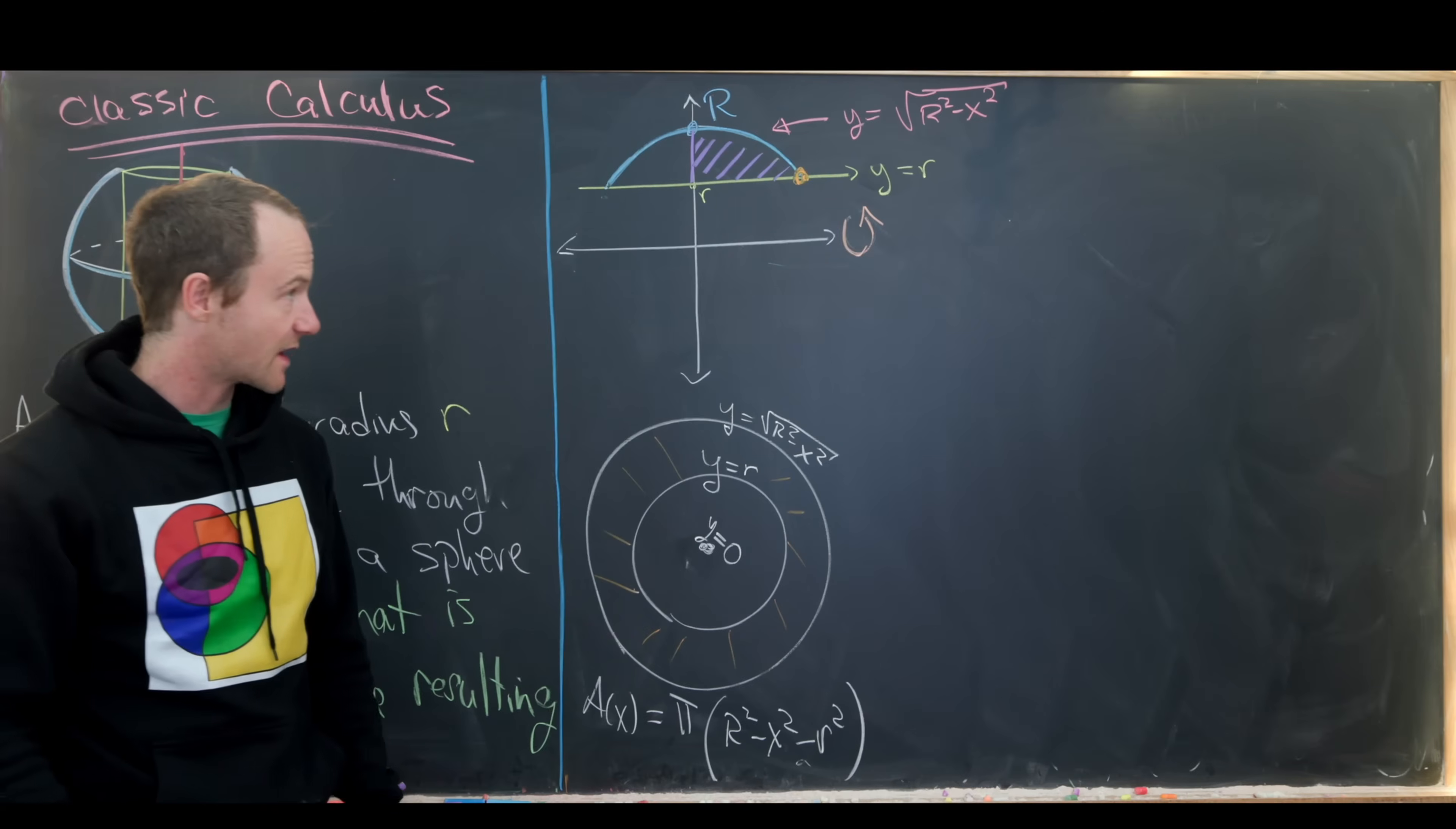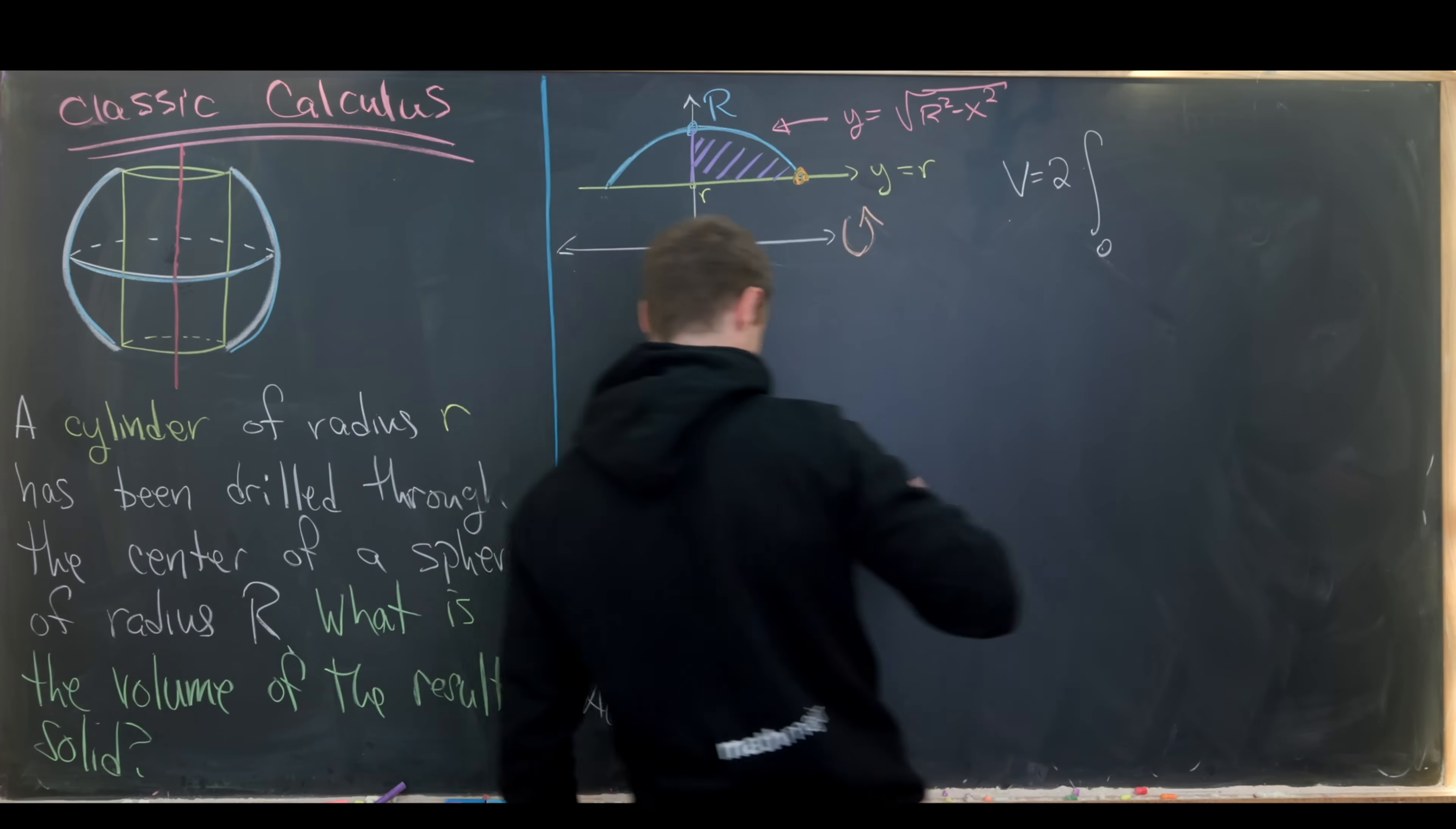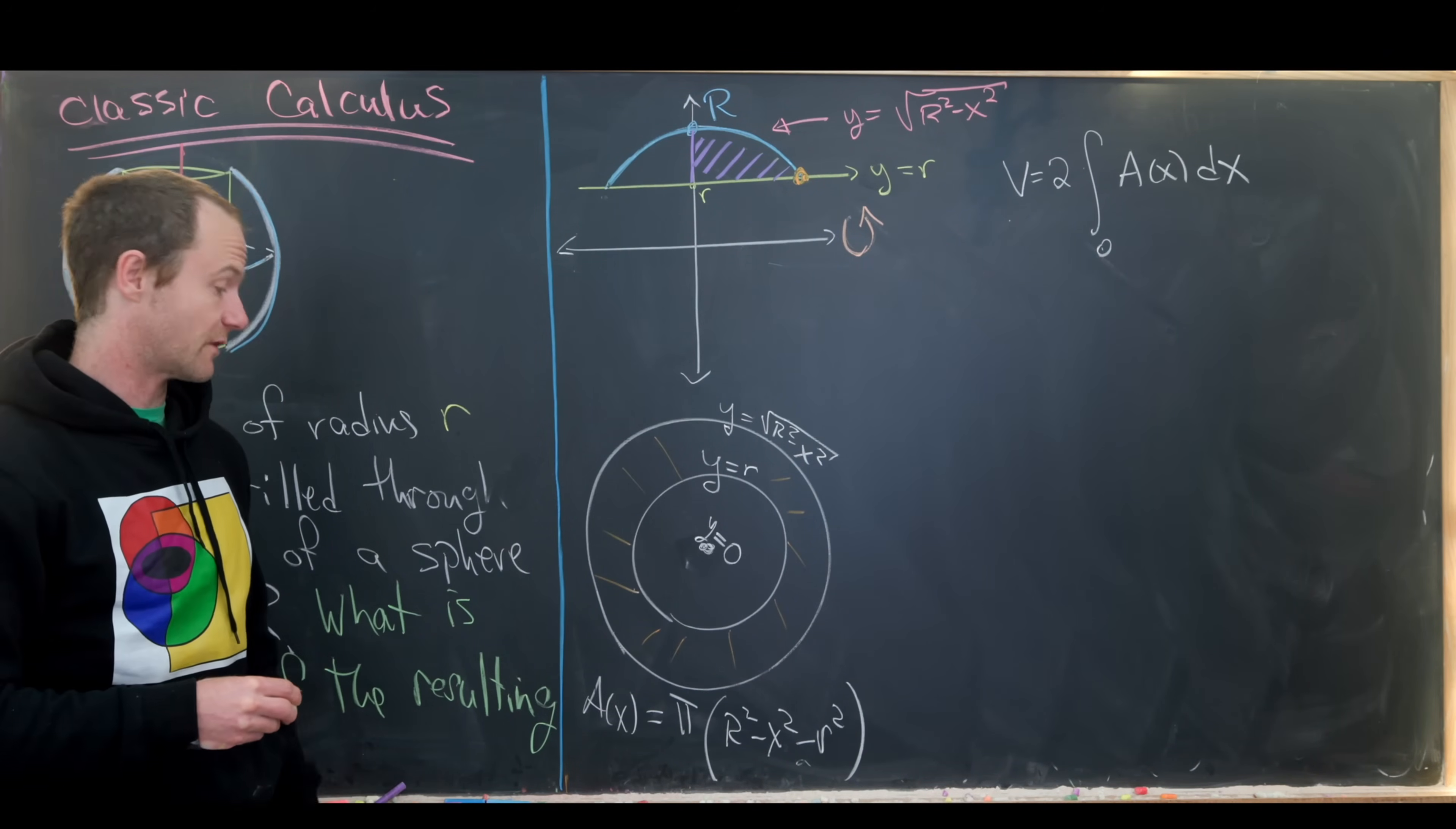So we have something like that. And then finally, our volume will be twice the integral from zero to whatever this point is of our area function dx. So that's our standard setup for calculating a volume of a solid of revolution.